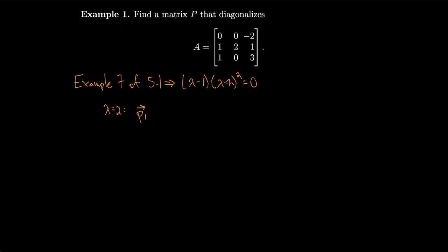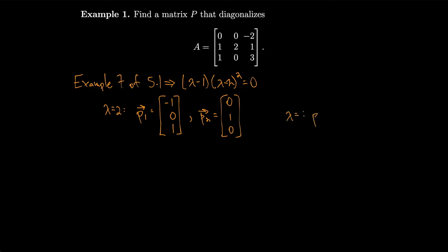So P1, the first basis vector for eigenvalue lambda equals 2, is (minus 1, 0, 1). The other basis vector P2 is (0, 1, 0). Our other eigenvalue lambda equals 1 gave us one more vector: P3, the basis for its eigenspace, is (minus 2, 1, 1). Now that we have the bases for the eigenspaces, we put them all together and build the matrix P from those columns: P equals the matrix with columns (minus 1, 0, 1), (0, 1, 0), and (minus 2, 1, 1).